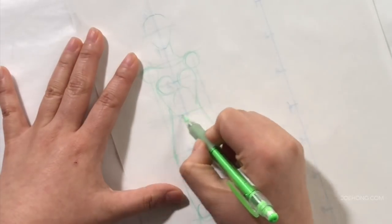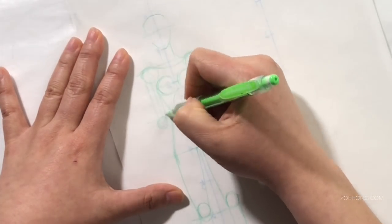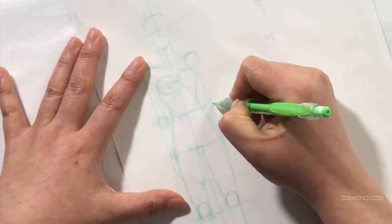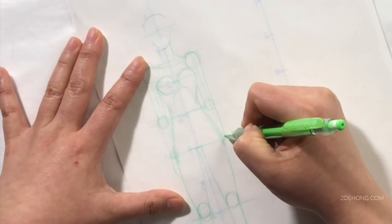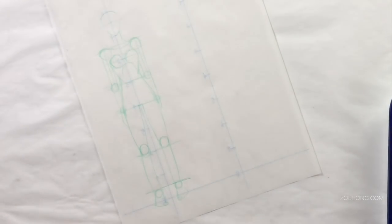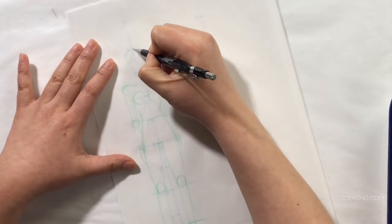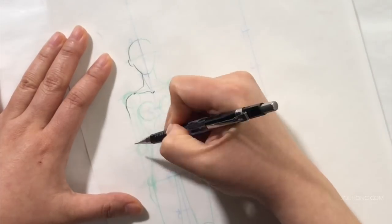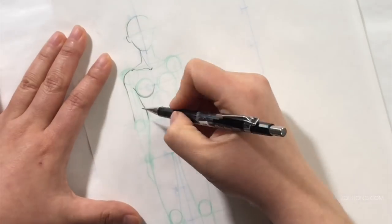The knees are just above the six head mark and the ankles are just under seven and a half heads. Waist is at three and so are the elbows. Wrists are at four right along the crotch line.